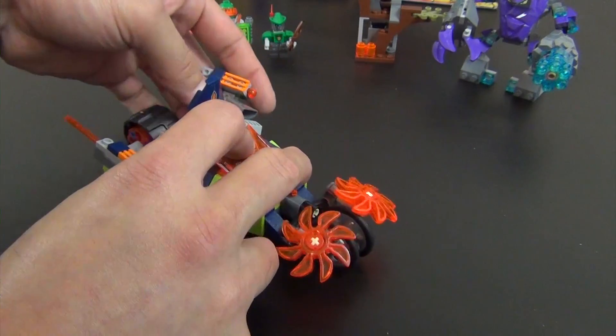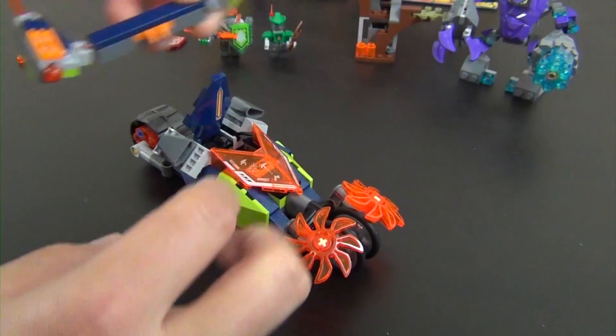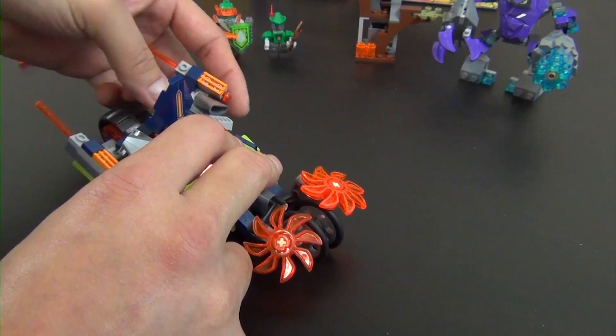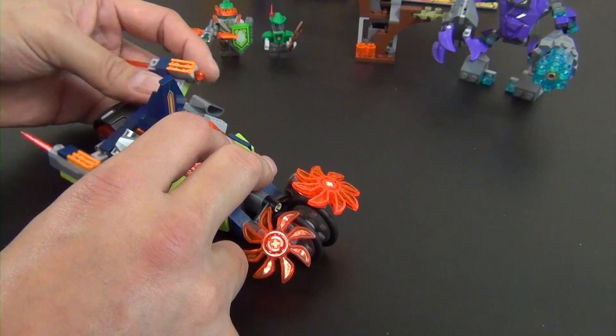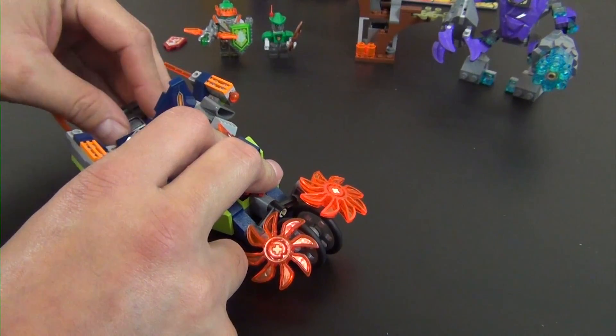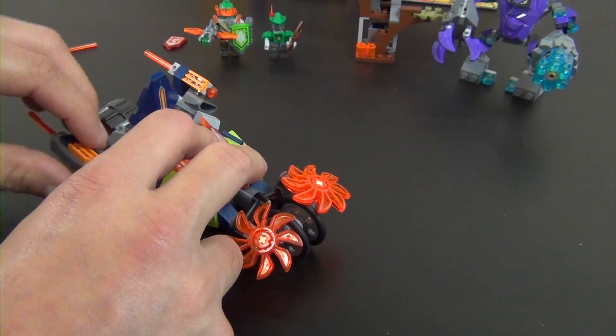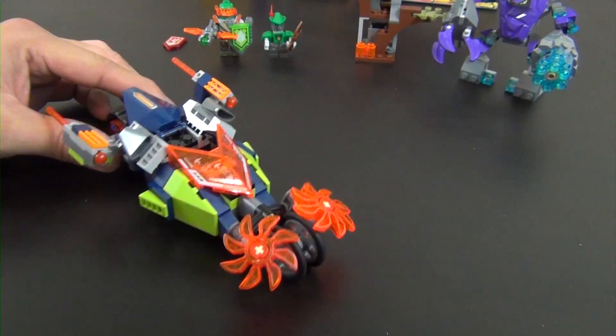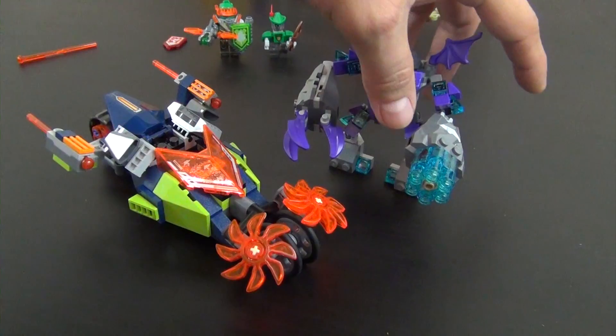This piece pops off and it'll connect to the battle suits. Not the ultimate characters, but like the battle suit Clay and Aaron and Macy. So all those battle suits that we built. Yeah, that completes the build of it. Let's move everything over.